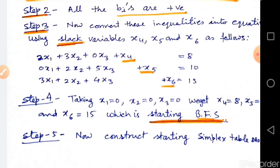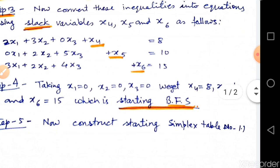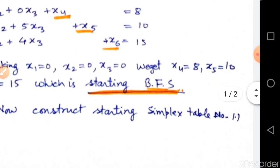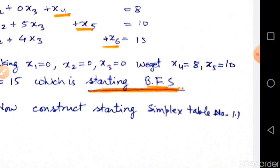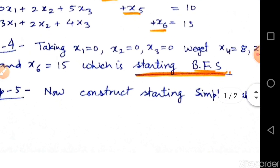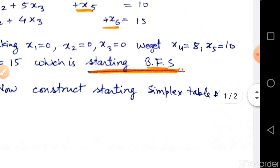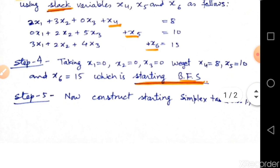Step 4: finding the initial basic feasible solution. Here we set the original variables x1, x2, x3 equal to 0, so we get the starting initial basic feasible solution: x4 equals 8, x5 equals 10, and x6 equals 15.